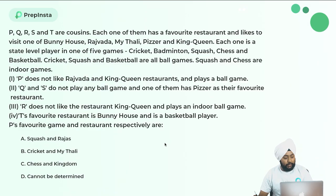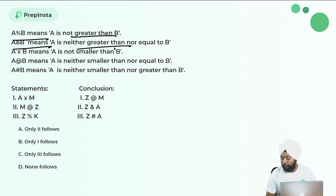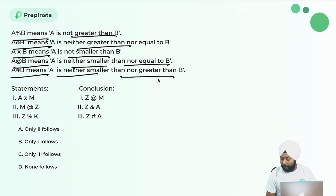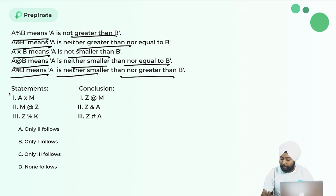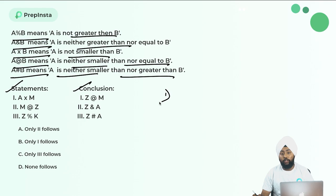Next question uses symbolic operators. 'A percent B' means A is not greater than B. 'A @ B' means A is neither greater than nor equal to B. 'A × B' means A is not smaller than B. 'A + B' means A is neither smaller nor equal to B. 'A # B' means A is neither smaller nor greater than B. We are given symbolic statements and must find which conclusion is correct. Pause the video and give your answer in the comments.